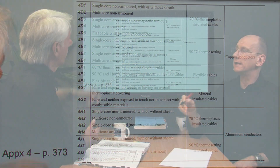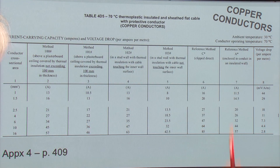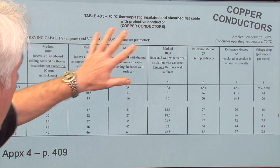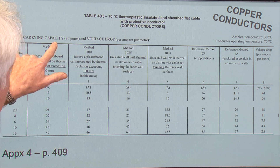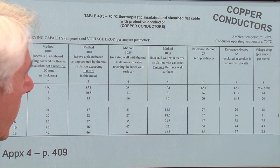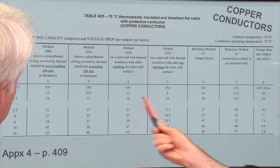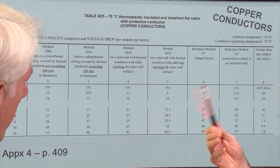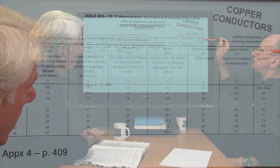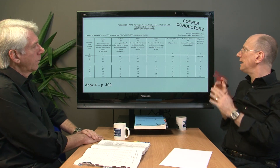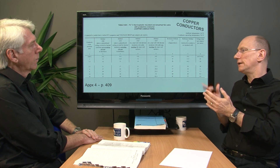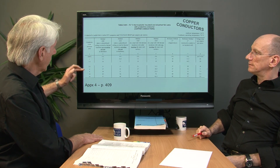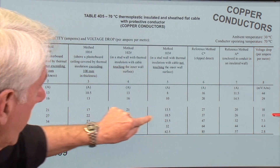Looking at table 4D5, we can see we've got cross-section areas listed. The title shows thermoplastic insulated, copper conductors — so we know we're in the right place. This table deals with both current carrying capacity and volt drop for various reference methods. The one we're looking for is the voltage drop column. Unlike other tables in this appendix, this table only covers single phase, because we don't do DC or three phase in twin and earth cable. So it's very simply a case of finding our cross-section area, which is 4mm², and following along we find it's 11 — 11 millivolts per ampere per metre.